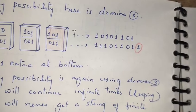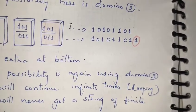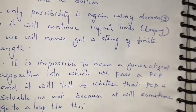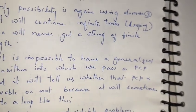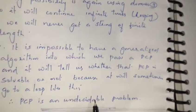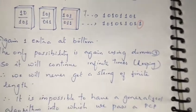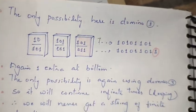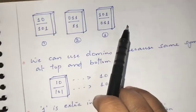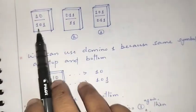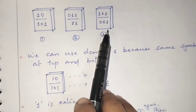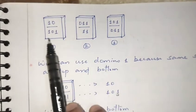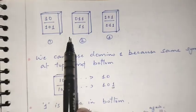This will continue infinitely — it goes into an infinite loop and we never get a finite-length matching string. It is not possible to write a generalized algorithm that, given any PCP instance, determines whether it is solvable or not, because sometimes it runs into an infinite loop. This example proves that PCP is an undecidable problem.